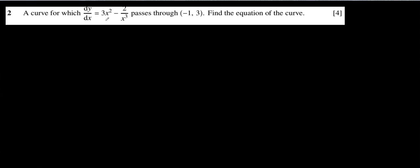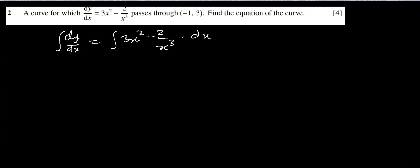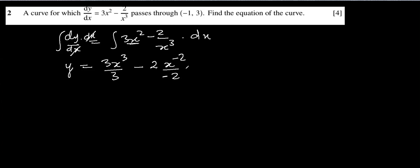In question number 2, they are talking about a curve where dy over dx, the rate at which the curve is changing, is given. The original curve passes through the point (minus 1, 3) and we need the equation of the curve. So we have to integrate dy over dx. We integrate 3x² minus 2 over x³ with respect to x. Integration of dy will be y, and integration of 3x² will be 3x³ over 3. For the second term, 2 times x to the power minus 3 integrates to x to the power minus 2 divided by minus 2.